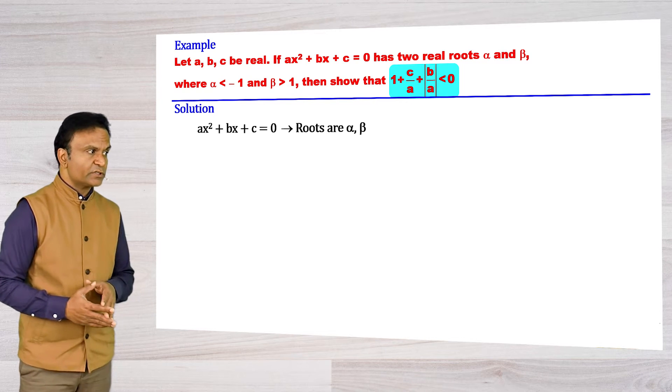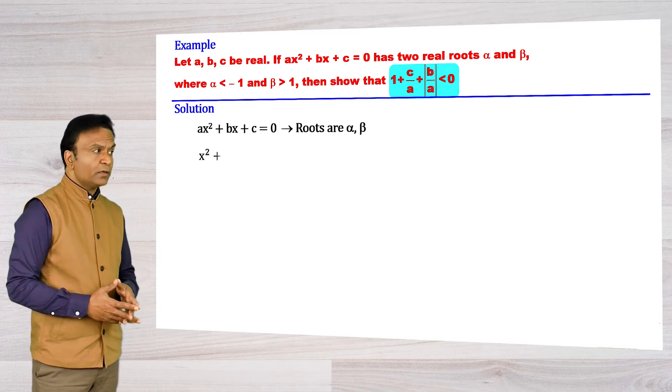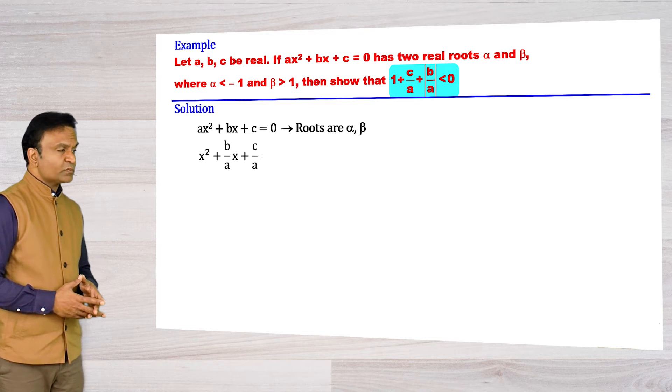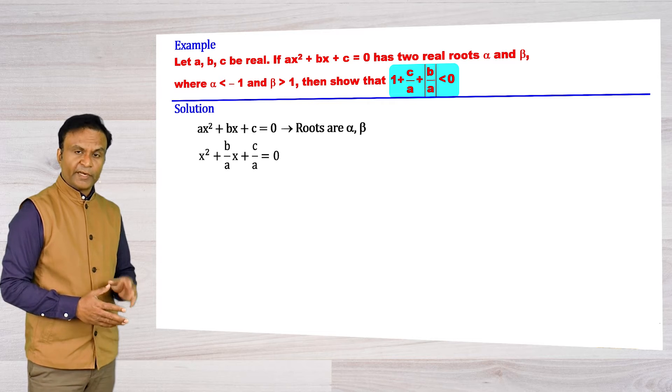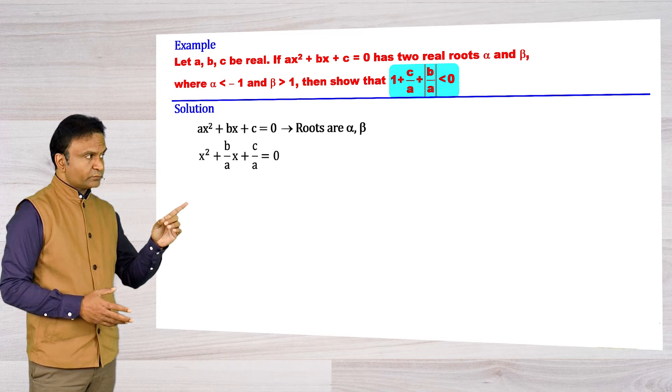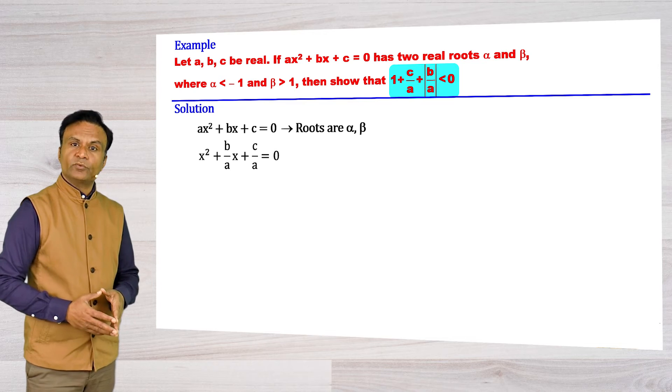I have quadratic equation x² + (b/a)x + (c/a) = 0. I modified the equation from the condition which I have to prove.